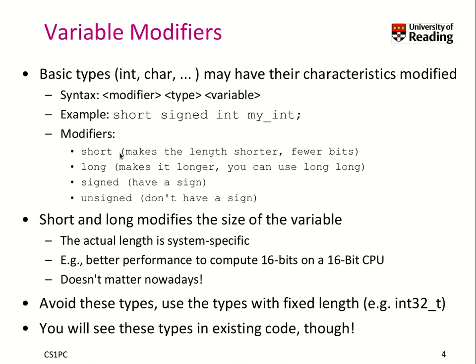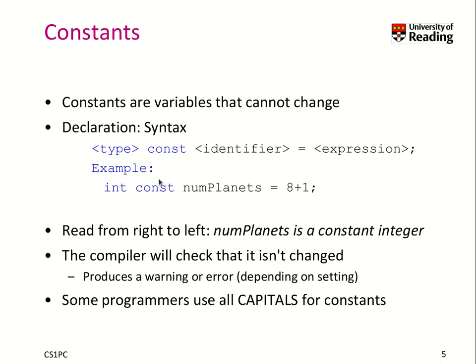The next modifier we talk about is constants. You specify such a data type by using the 'const' keyword. Here I have a valid identifier 'numPlanets' which is of type int, and I add 'const' which makes it a constant number — that means it cannot be changed ever again. Since you have to set it initially, when you declare such a constant variable you have to assign it immediately to an expression.